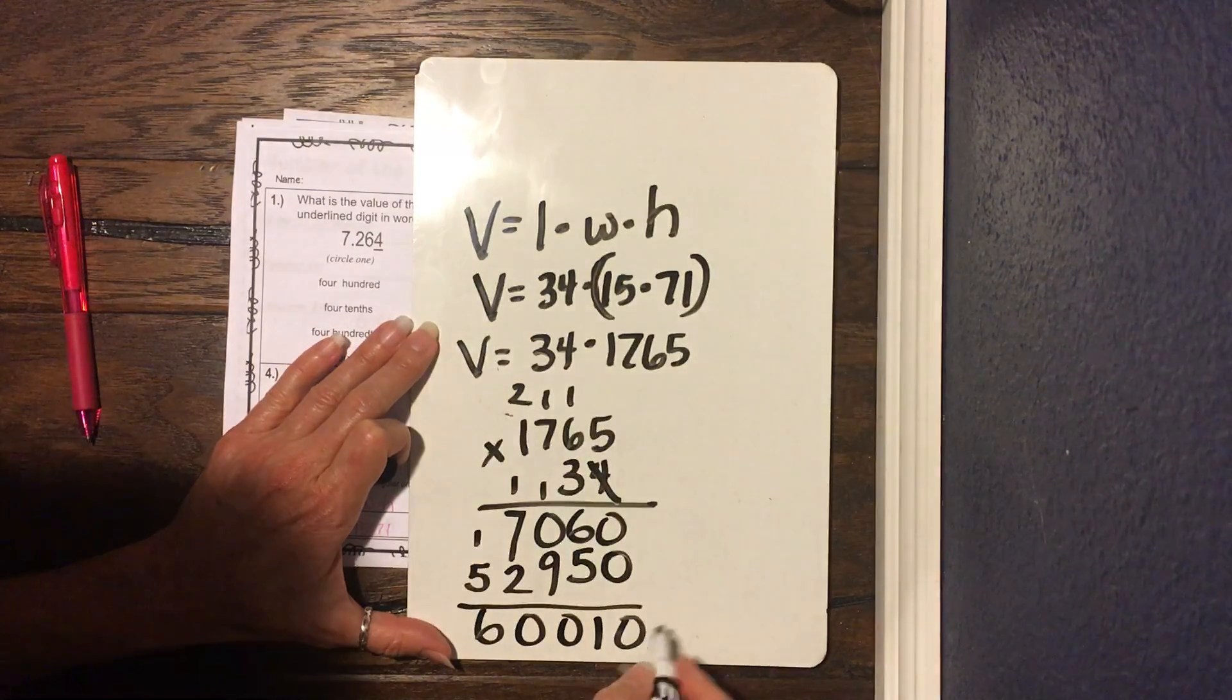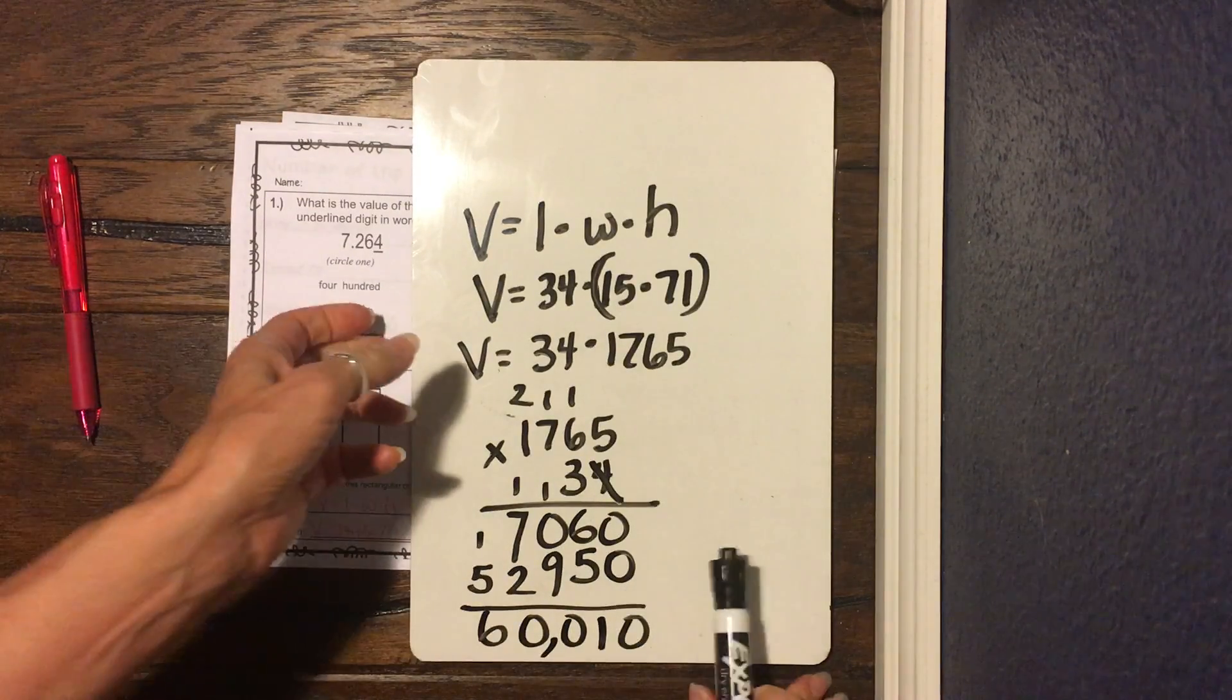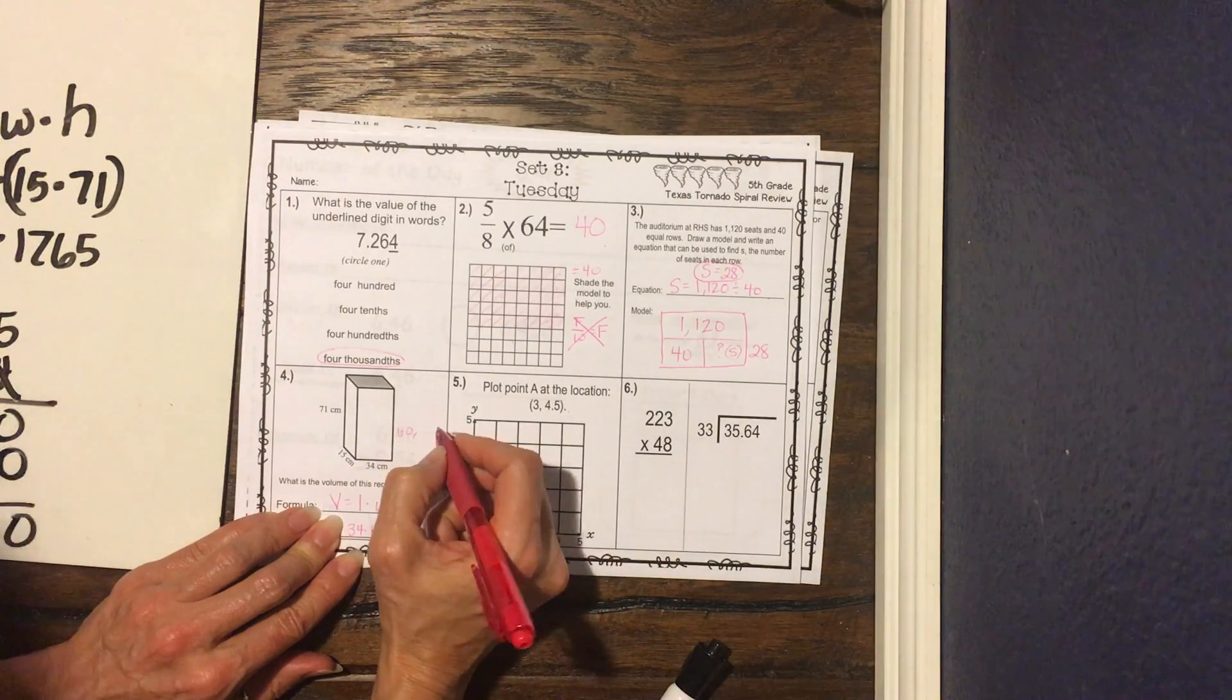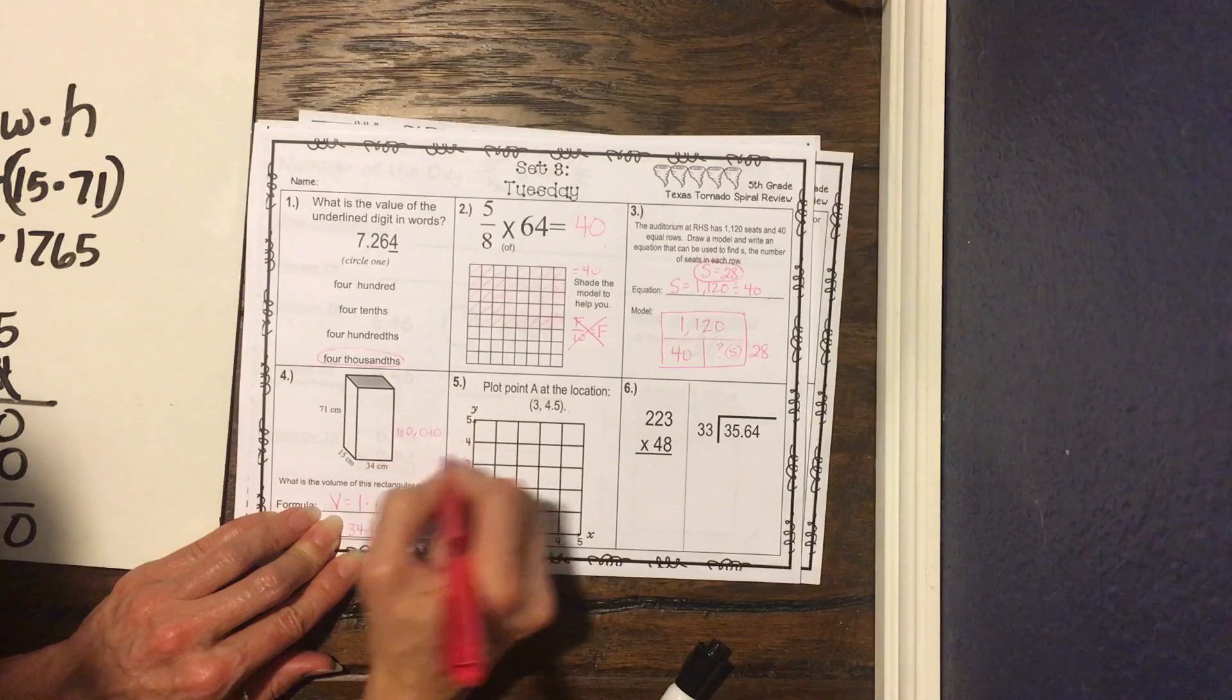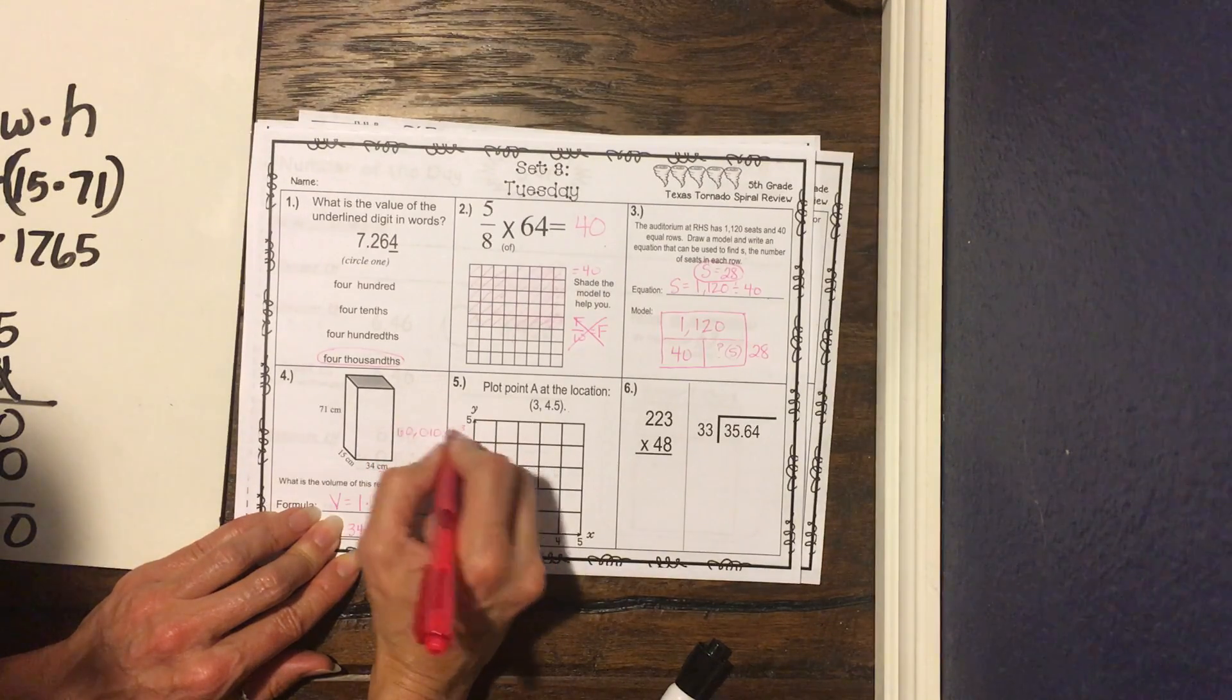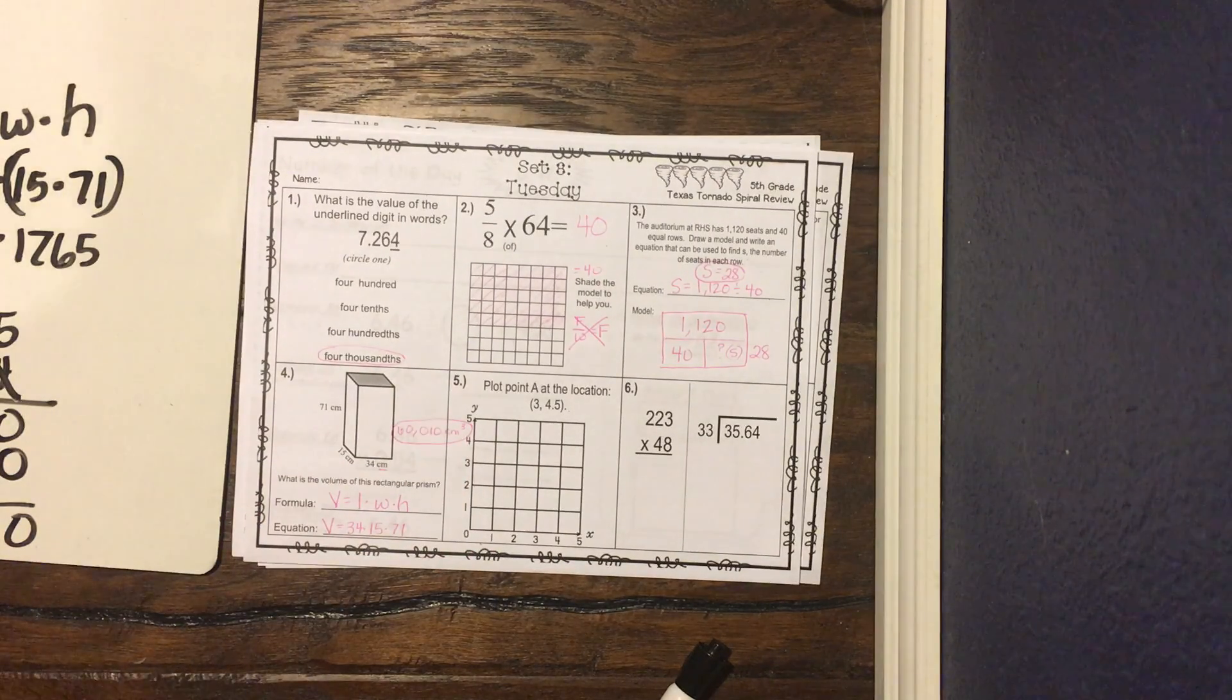We have no decimals in our numbers, so we're just gonna count back 3 and put our comma. So the volume for this rectangular prism is 60,010, and our unit of measure is centimeters, and we found the volume, so it's cubed. So that's actually the answer to the problem. So practice your multiplication.